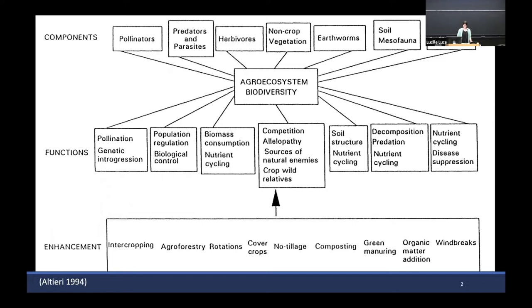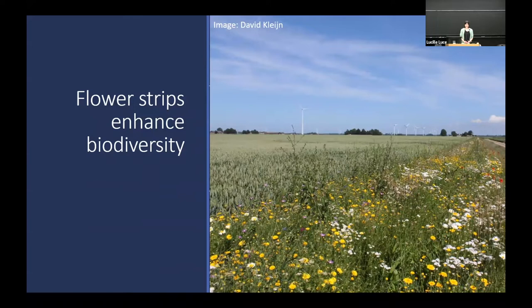Now, there are lots of words for this practice. By flower strips, I'm referring to an area of the farm, often along the field margin or in a fallow area, that's not planted with crops, but instead planted with beneficial non-crop species. At least part of the goal should be to provide floral resources — nectar and pollen — to beneficial insects, but there could absolutely be other goals as well.